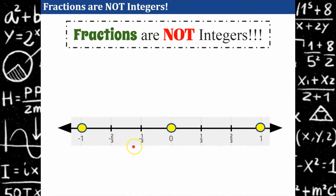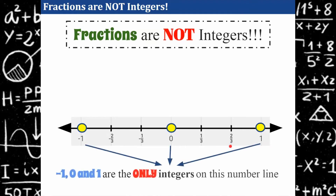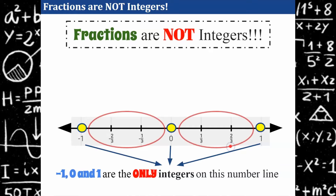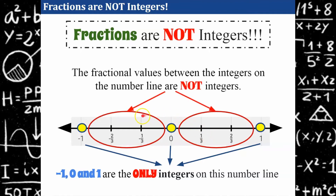Negative two-thirds, negative one-third, one-third, and two-thirds are numbers that are not integers. In future lessons you'll learn that we call those rational numbers. So negative one, zero, and one are the only integers on this number line. The fractional values between the integers on the number line are not integers.